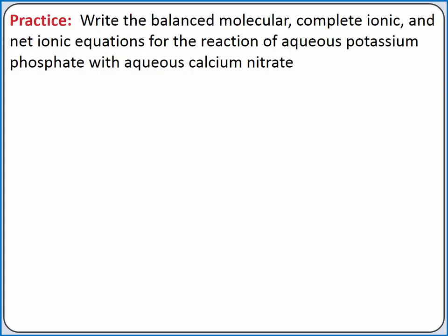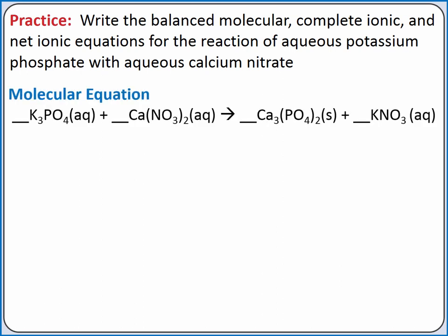Let's practice. We'll start by writing the molecular equation for the reaction between aqueous potassium phosphate and aqueous calcium nitrate. When our ions switch partners, we produce calcium phosphate and potassium nitrate. According to our solubility rules, calcium phosphate is insoluble, so it is our precipitate, but potassium nitrate is soluble, so it remains in solution as aqueous. To balance this reaction, we need coefficients of 2, 3, 1, and 6.